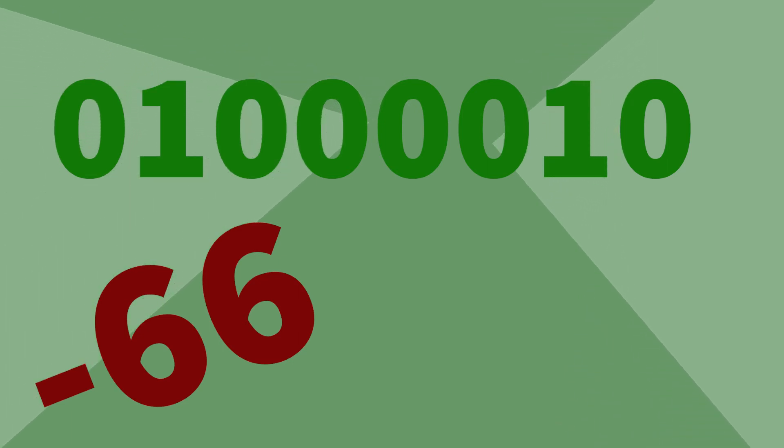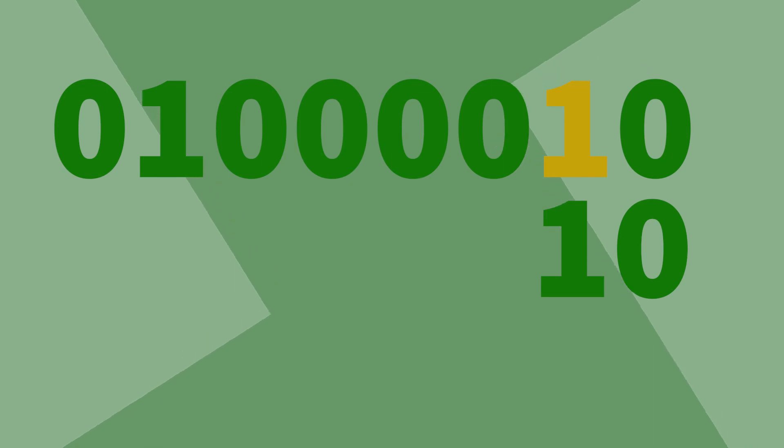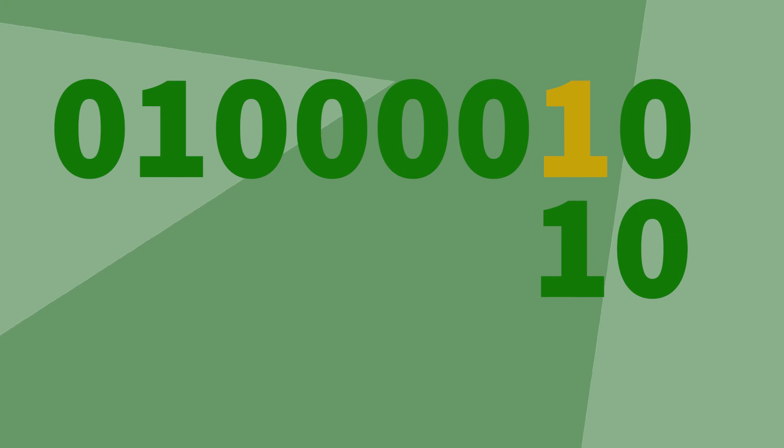We then look for the right-most bit. Copy this, and keep copying until you get to your first 1. Copy this 1 as it is, but then flip all the other bits after it — so all the 0's become 1, and all the 1's become 0.